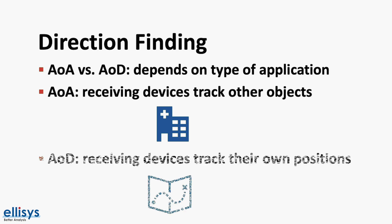Angle of departure, on the other hand, is used in cases where devices need to track their own positions within the system, such as in an application where the user is finding their way navigating an indoor mall using their smartphone.